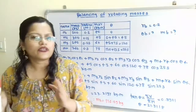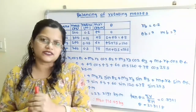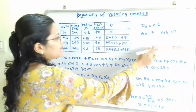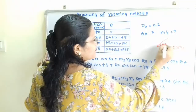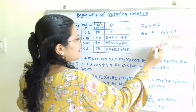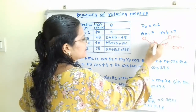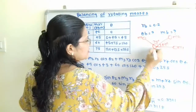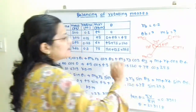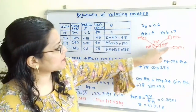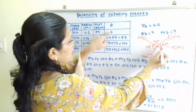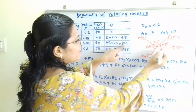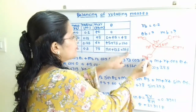The next column is for angle theta. The angle between successive masses is given, so we assume that the first mass M1 is at 0°. The angle between M1 and M2 is 45°, so M2 is at 45°. Between M2 and M3 the angle is 75°, so M3 is at 45+75=120°. Between M3 and M4 the angle is 135°, so M4 is at 45+75+135=255°.